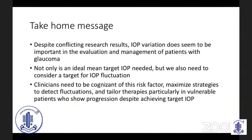To summarize the take-home message: despite conflicting research results, IOP variation does seem to be important in the evaluation and management of patients with glaucoma. Not only is an ideal mean target IOP needed, but we also need to consider a target for IOP fluctuation. Clinicians must be aware of this risk factor, maximize their strategy to detect fluctuation, and tailor treatment — particularly in vulnerable patients who show progression despite achieving target intraocular pressure. Thank you.